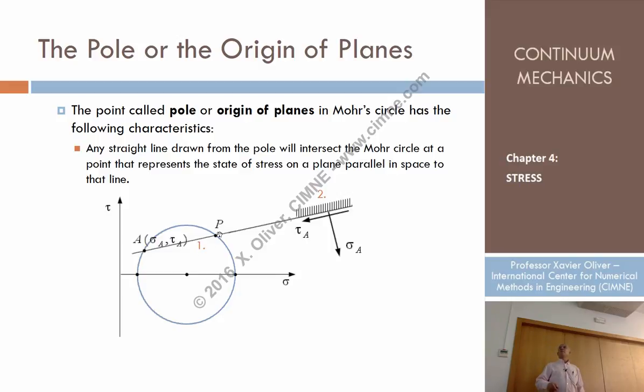What about the stresses in a horizontal plane? Well, if through the pole I trace a horizontal line, that line will intersect the Mohr circle in another point. That point is